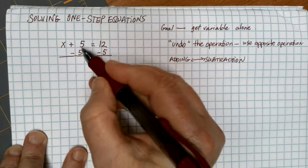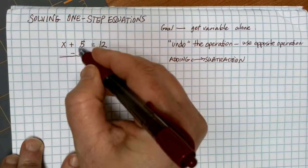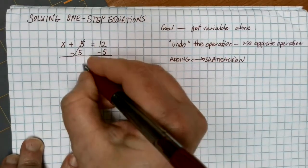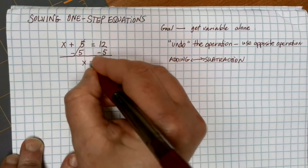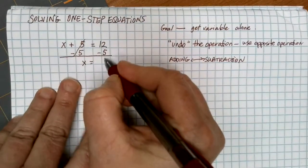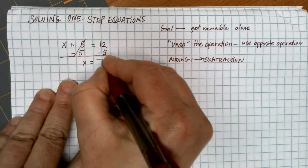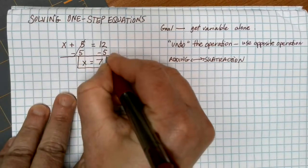So here, by adding 5 and then subtracting 5, these undo each other and leave me just with the x alone on one side of the equation. On the other side of the equation, I have 12 minus 5, which gives me 7, and that's my solution.